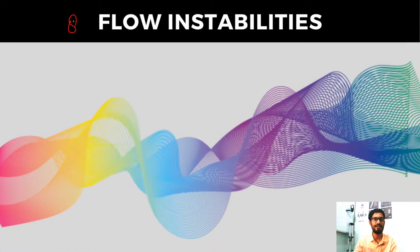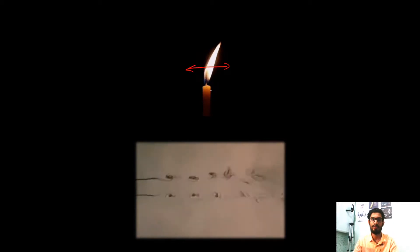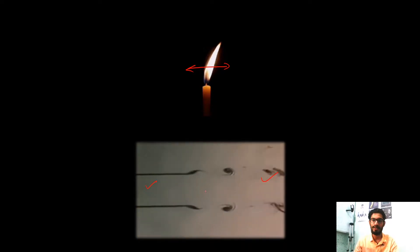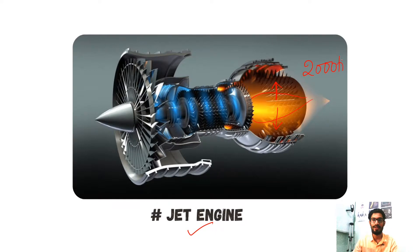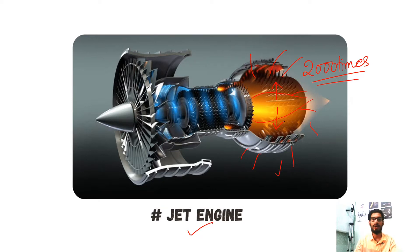Number eight is flow instabilities. Fluid flow can occur in unpredictable ways — for example, the back-and-forth motion of a candle flame, or a flow that starts laminar and becomes turbulent. These instabilities must sometimes be avoided for higher efficiency. For instance, if the combustion flame of a jet engine oscillates back and forth 2000 times per second, it could burst or damage the entire jet engine. To avoid this, we need to understand fluid flow.